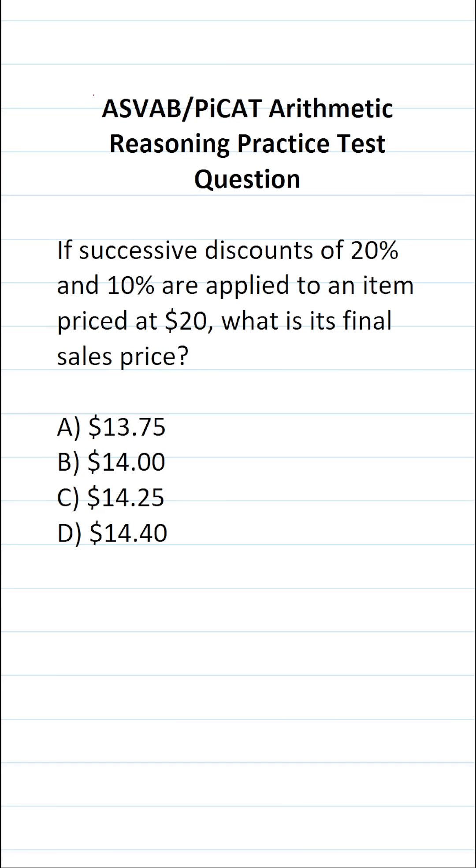This arithmetic reasoning practice test question for the ASVAB and PICAT says, if successive discounts of 20% and 10% are applied to an item priced at $20, what is its final sales price?